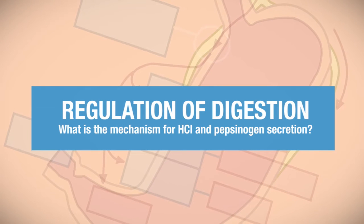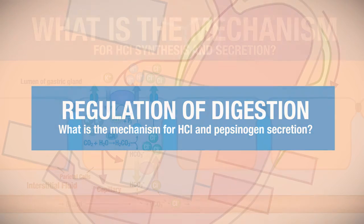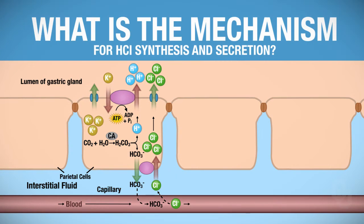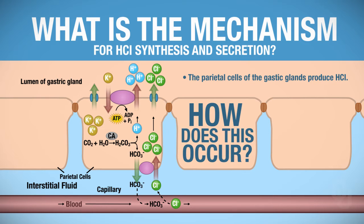Next, we want to turn to the mechanism for hydrochloric acid synthesis and secretion. We're dealing with the lumen of the gastric glands, so let's get oriented here. The parietal cells of the gastric glands are going to produce hydrochloric acid, but the question is how does this happen?